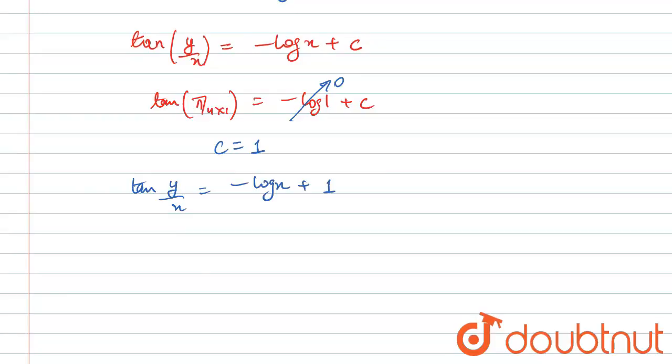Now our equation becomes tan(y/x) = -log x + 1. From here, 1 can be replaced as log e (natural log of the exponential function), since the value of log e also equals 1.